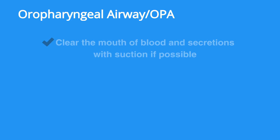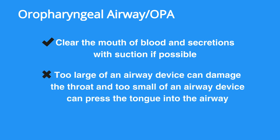To insert an oropharyngeal airway, or OPA, first clear the mouth of blood and secretions with suction if possible. When selecting an airway device, keep in mind that too large of an airway device can damage the throat, and too small of an airway device can press the tongue into the airway.